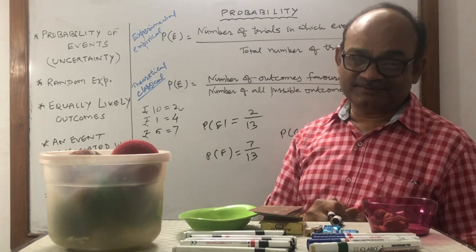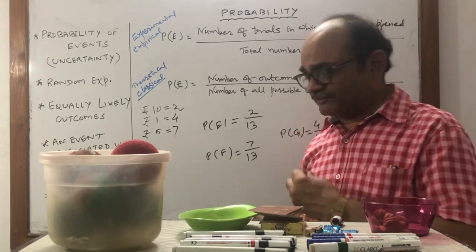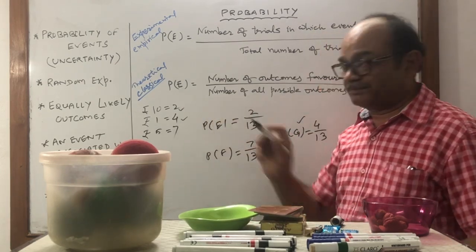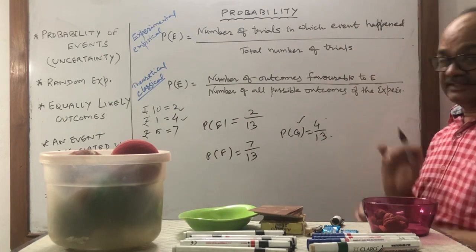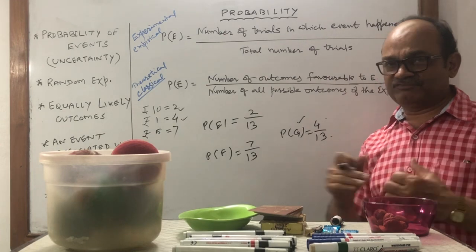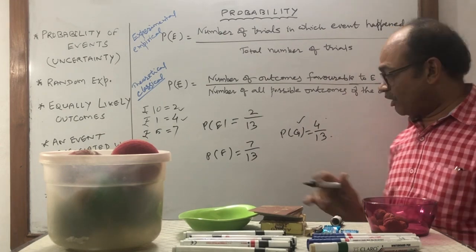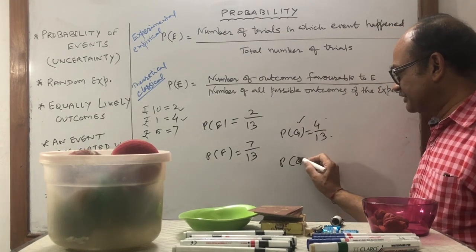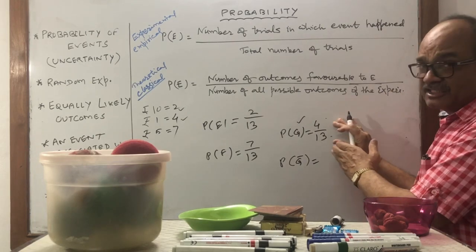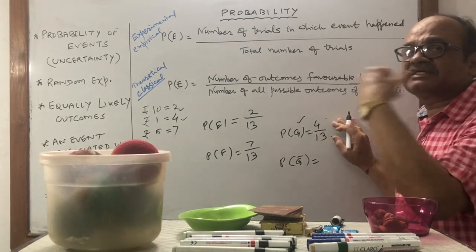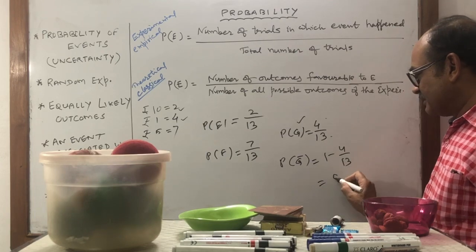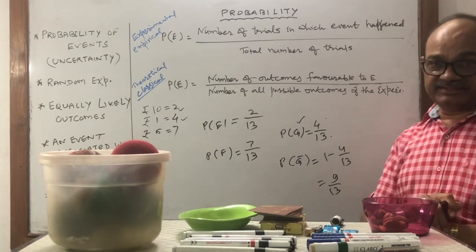If a person's chance of getting a 1-rupee coin is 4 by 13, then the complement of this — meaning we don't want it but want all others — is 1 minus 4 by 13, which gives 9 by 13.